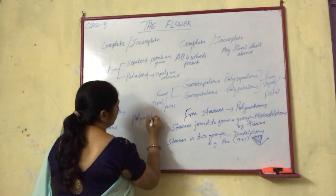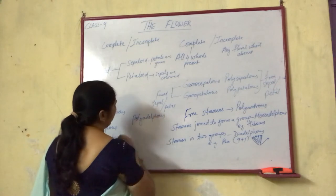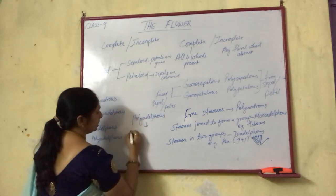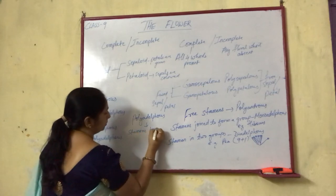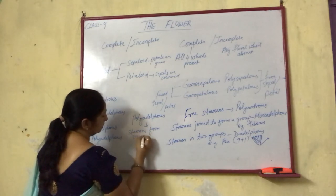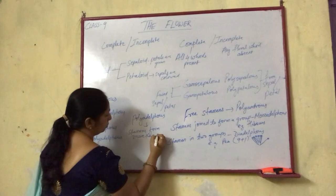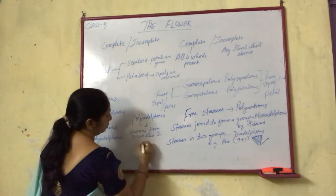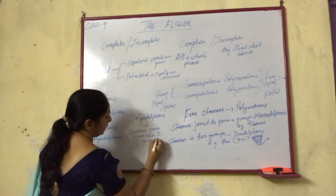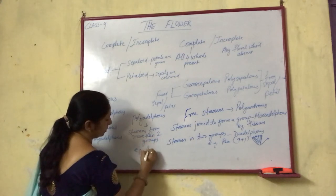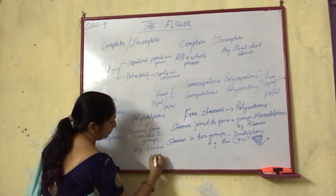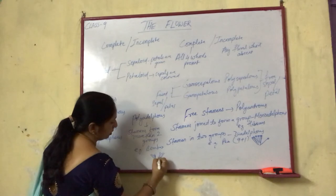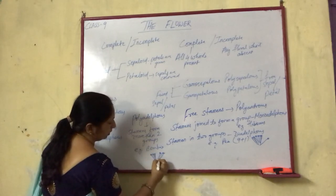The next condition is polyadelphous — when stamens form more than two groups. An example is Bombax, where stamens form many groups together. This condition is termed as the polyadelphous condition.